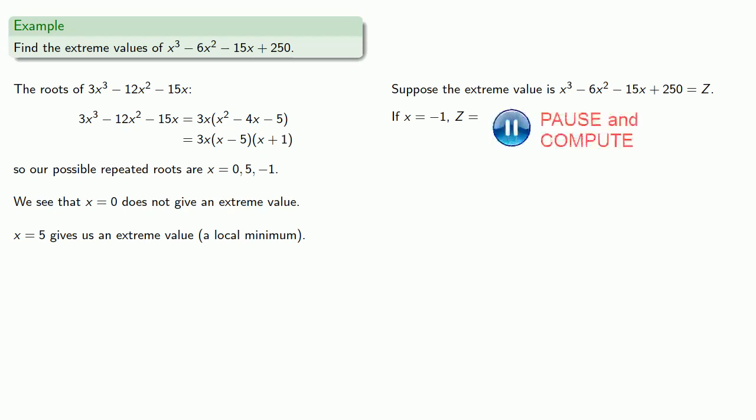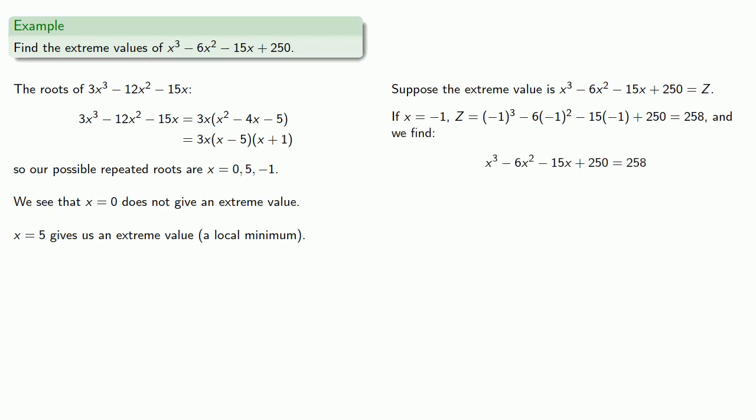If x equals negative 1, z works out to be... Again solving our equation. If x equals negative 1 is a root, then x plus 1 must be a factor. And so our left hand side is x plus 1 times... And then... So we see that x plus 1 is a repeated factor. And x equals negative 1 is a repeated root. So there will be an extreme value at x equal to negative 1. And again through other means we can see that this works out to be a local maximum.